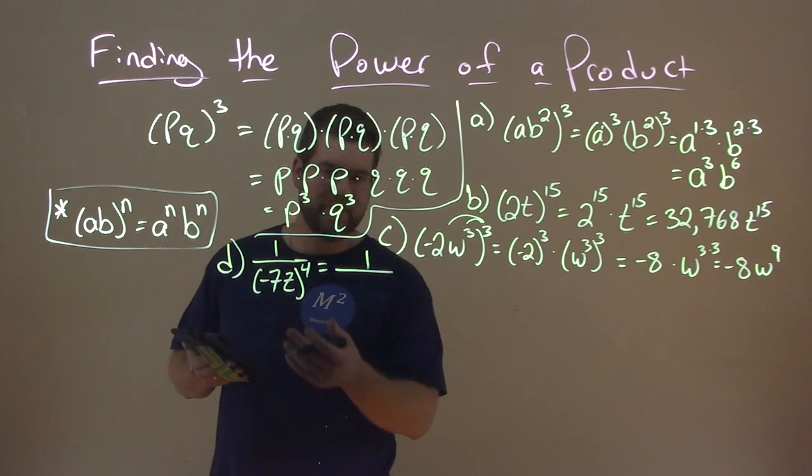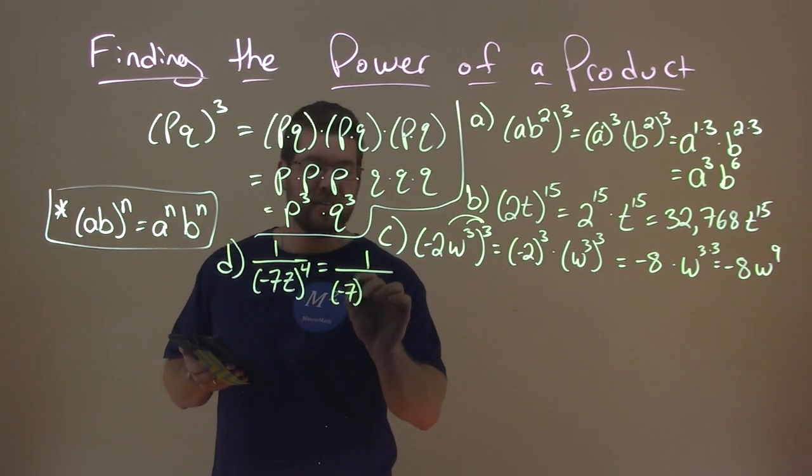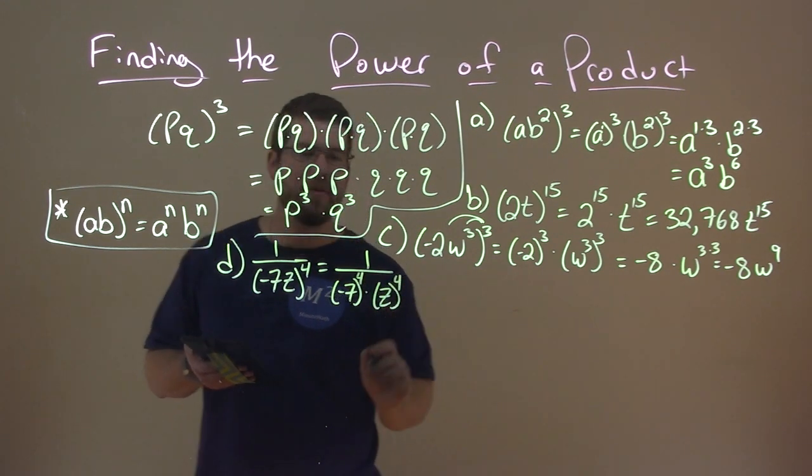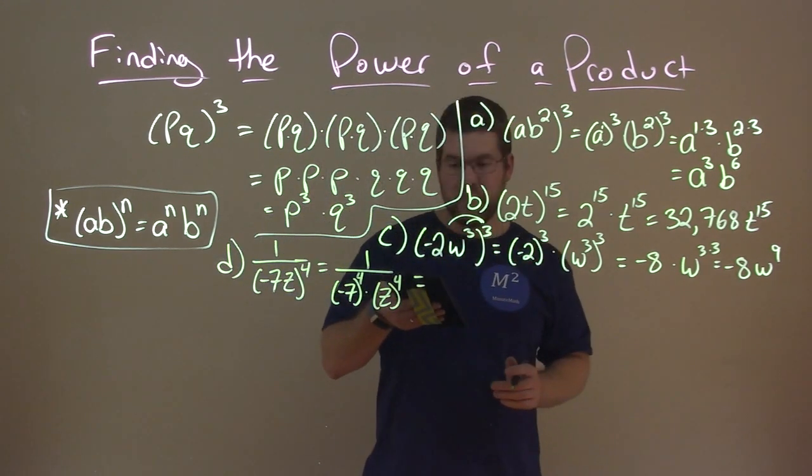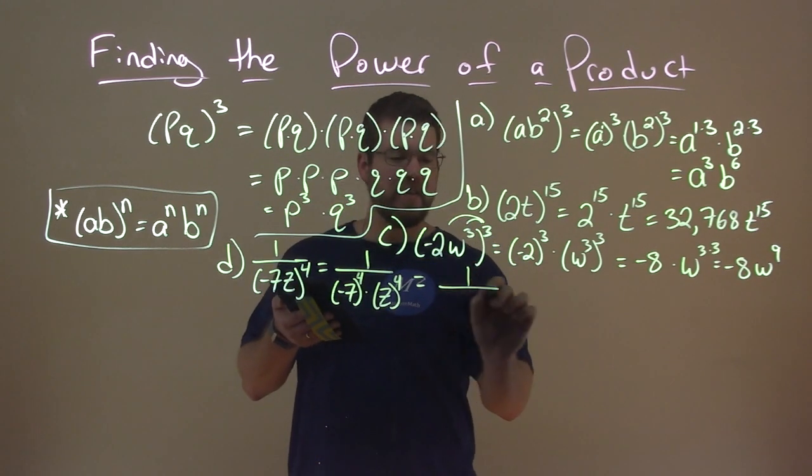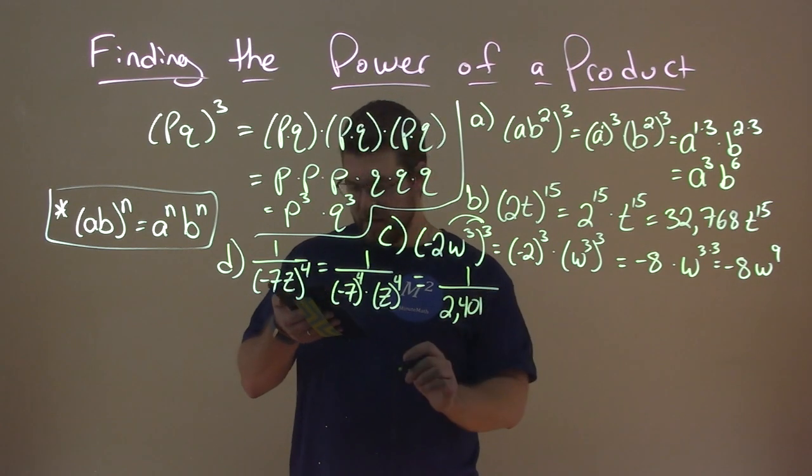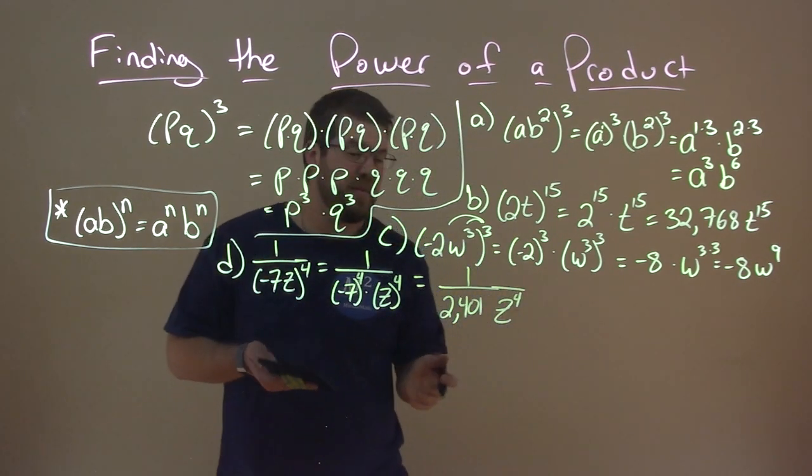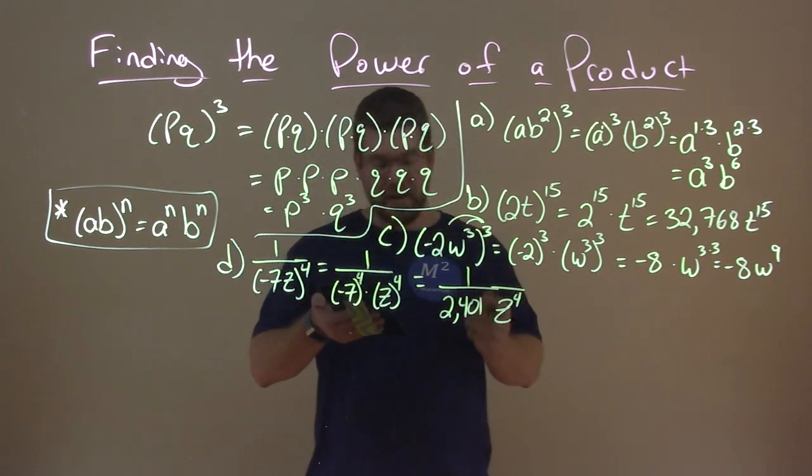So, we have negative 7 to the fourth power times z to the fourth power, using our rule here. Now, negative 7 to the fourth power is going to be a positive number because it's an even exponent. And that is just 2,401. And we just have z to the fourth. And that's really it. We simplify it. It's 1 over 2,401 times z to the fourth.